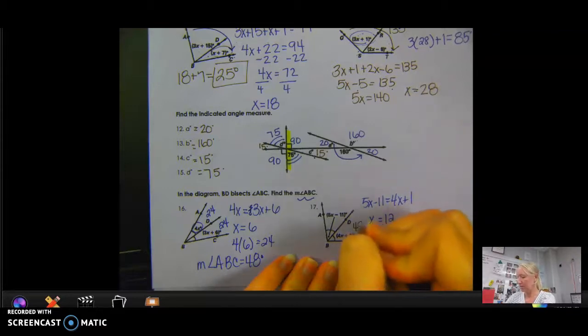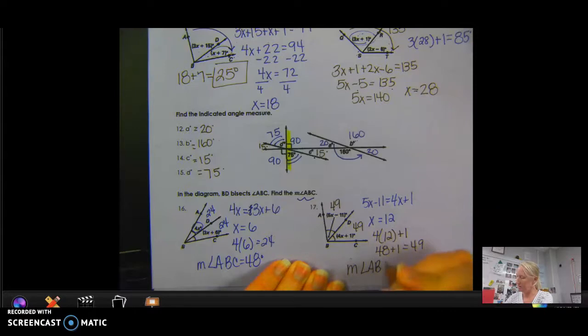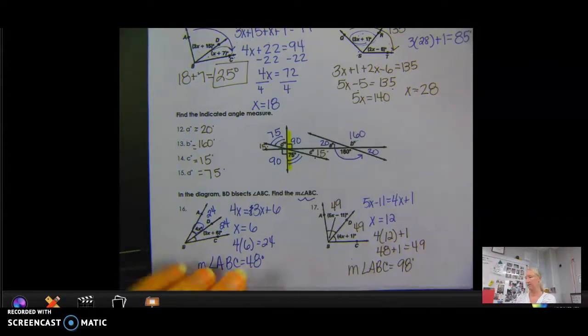Plus 1 equals 49 degrees. So this guy is 49. This guy is 49. So the measure of angle ABC is 98 degrees. The 49 and 49 together. Okay? All right.